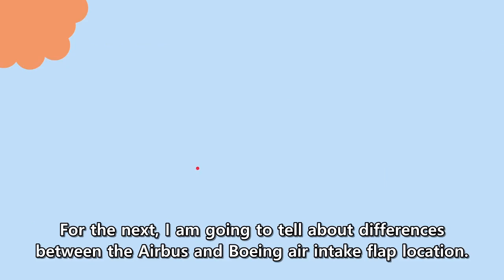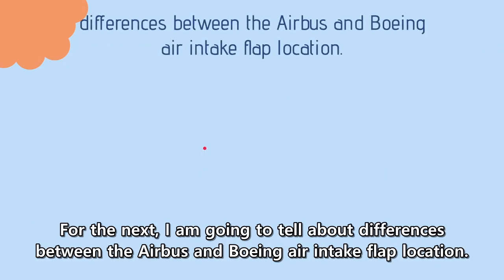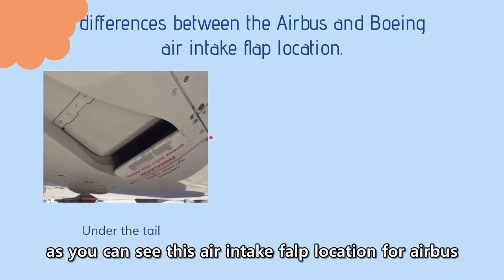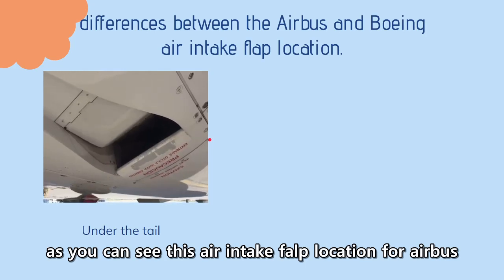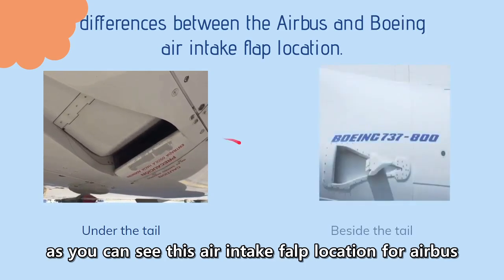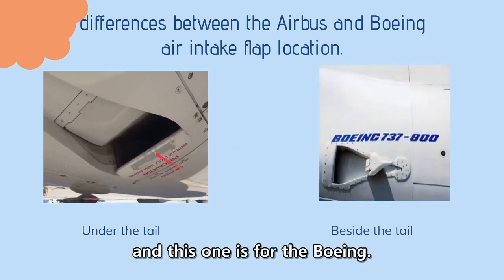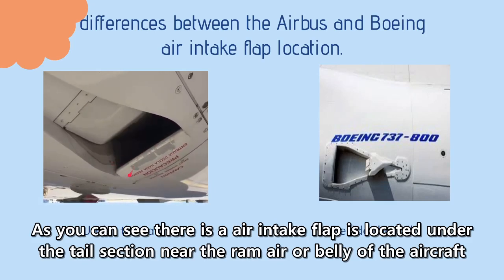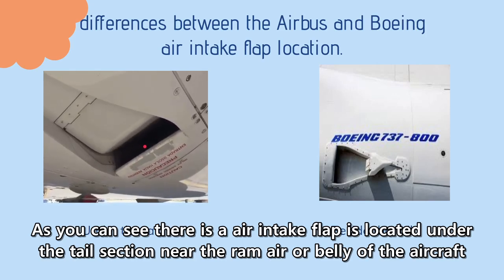Next, I am going to talk about the difference between the Airbus and Boeing air intake flap location. As you can see, this air intake flap location is for Airbus and this one is for Boeing. There is an intake flap under the tail section, near the ramp air or belly of the aircraft.